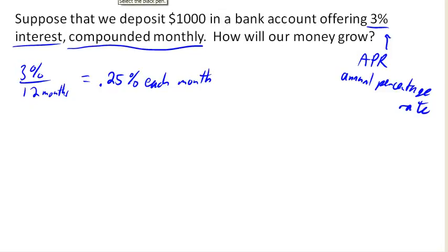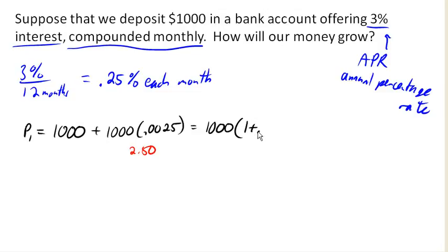So in the first month, at the end of one month, I'm going to have my original $1,000 and I'm going to have earned 0.25%, so 0.0025, so I'm going to have earned $2.50 in interest. This expression is kind of messy, so let's go ahead and factor out the 1,000. That would leave me with 1,000 times 1 plus 0.0025, or in other words, 1,000 times 1.0025.